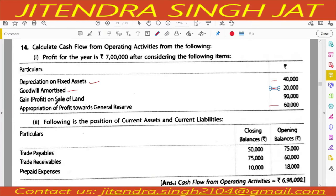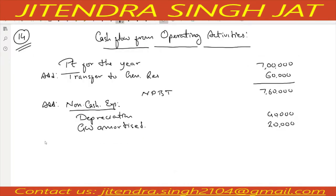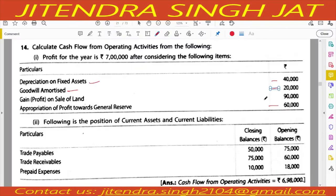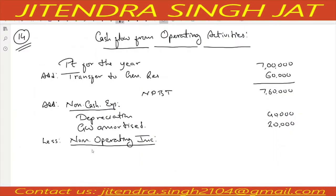Non-operating expenses are not given, but gain on sale of land is a non-operating income. What we do? We subtract non-operating income. Gain on sale of land is given as 90,000, so it will be subtracted.